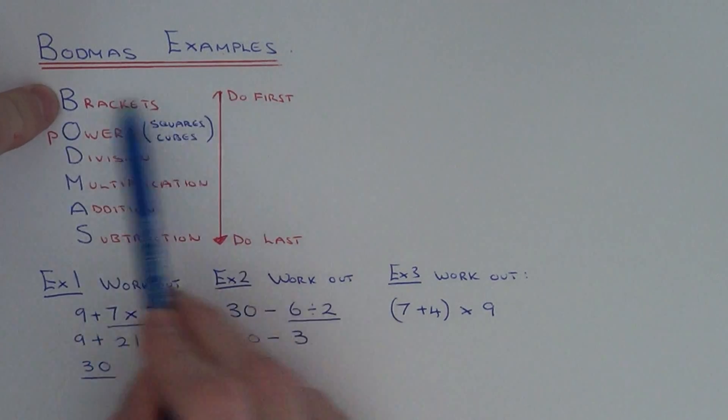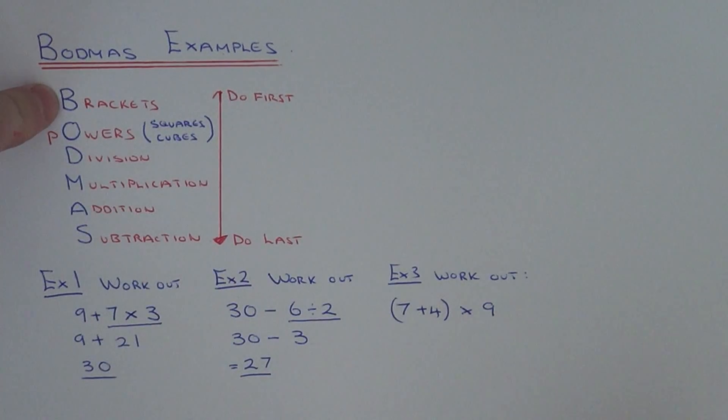So brackets is at the top of the word Broadmass. That's why you do it first. So we just need to work out 7 add 4 which is 11. So we end up with 11 times 9. And 11 times 9 is 99.